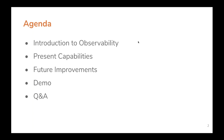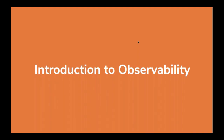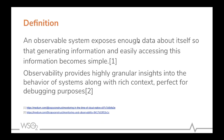For the introduction to observability, I'm using two quotes by Cindy Sridharan rather than a plain textbook definition. The first says: an observable system exposes enough data about itself so that generating and easily accessing this information becomes simple. The second part is: observability provides highly granular insights into the behavior of systems along with rich context, perfect for debugging purposes.